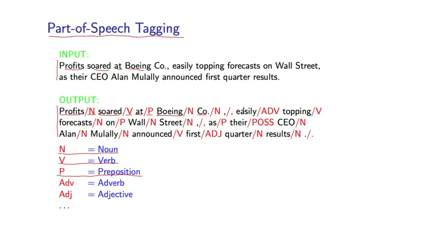Why is this a challenging problem? It turns out that ambiguity plays a crucial role in this problem, as it does in many other problems in natural language processing. For example, 'profits' is certainly a noun in this context, but it can also be a verb — 'the company profits from its endeavors.' Similarly, 'topping' is a verb in this sentence, but it can also be a noun, as in 'the topping on the cake.'